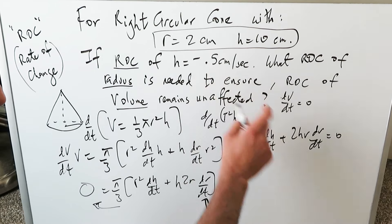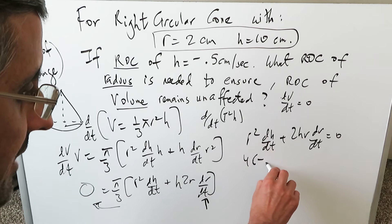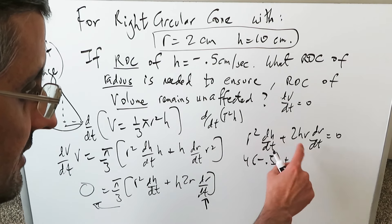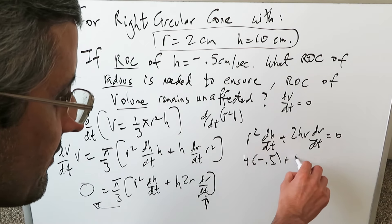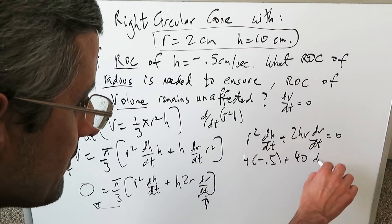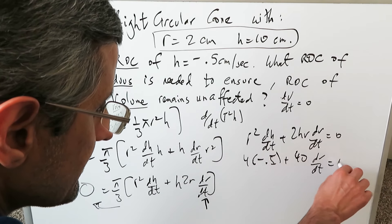You know your height rate of change is minus 0.5, so you get 4(-0.5) + 2hr... 2 times 2 times 10, that's 4 times 10, that's 40, times dr/dt, and your rate of change is exactly what you're trying to determine. dr/dt equals zero.